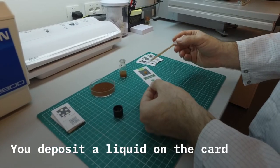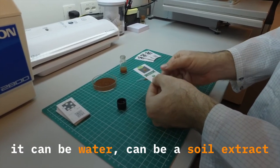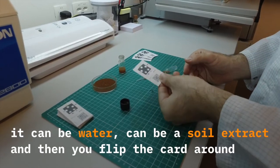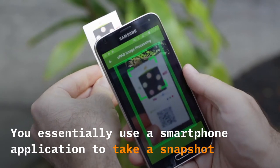You deposit a liquid on the card, just a droplet of the sample. It can be water, it can be a soil extract, and then you flip the card around. You essentially use a smartphone application to take a snapshot.